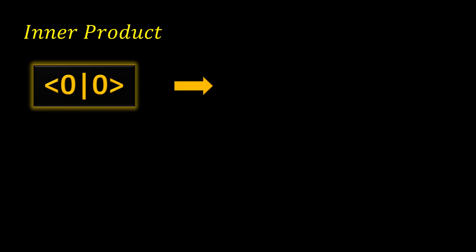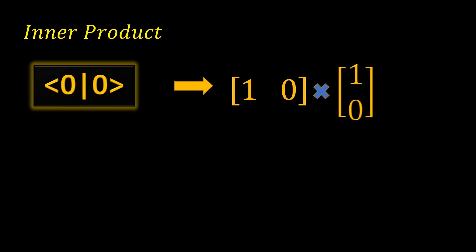We will understand it using the inner product. Using Dirac notations, this is how you represent the inner product of two vectors. For simplicity I have chosen the zero ket, but you can choose any other vector. The zero bra is the transpose of the zero ket, and since the entries are real numbers here we don't need to take the complex conjugate — but if the entries are complex, you just need to change the sign of the imaginary part.